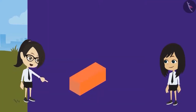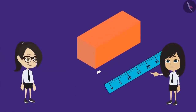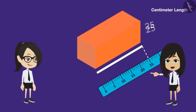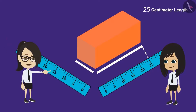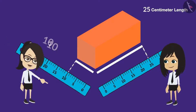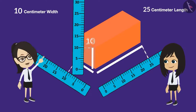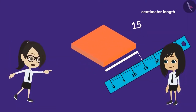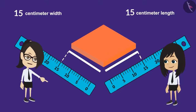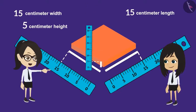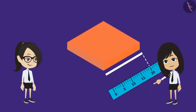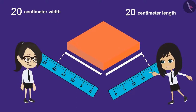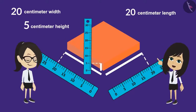Now, let's measure this one. The length of this brick is 25 cm, the breadth is 10 cm, and the height is also 10 cm. This brick is 15 cm long; its breadth is also 15 cm, which is the same as its length, and the height is 5 cm. This brick is 20 cm long, its breadth is also 20 cm, and the height is 5 cm.